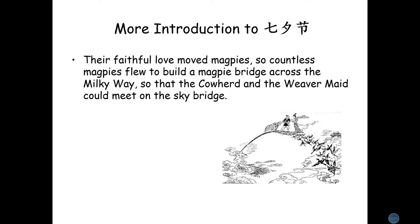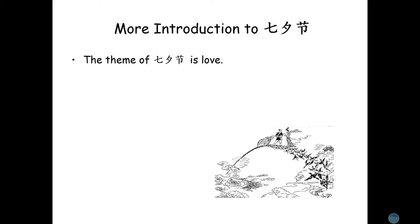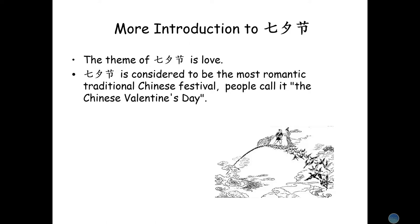Their faithful love moved magpies, so countless magpies flew to build a magpie bridge across the Milky Way, so that the cowherd and the weaver maid could meet on the sky bridge. The theme of Qi Xi Jie is love. It is considered to be the most romantic traditional Chinese festival — people call it the Chinese Valentine's Day.